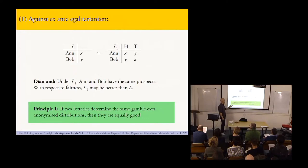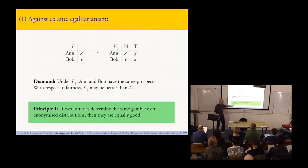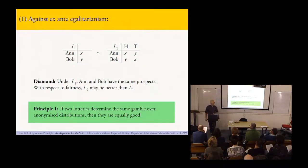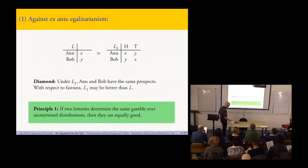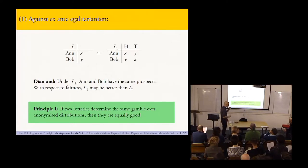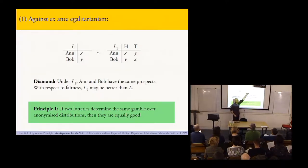Our first principle rejects this line of egalitarian thinking. It says that if two lotteries determine the same gamble over anonymized distributions — one person gets a cookie and one person doesn't — then they are equally good. Audience: Why do you call this an egalitarian consideration rather than a fairness consideration? Speaker: Fair enough. The point is that over here they have the same prospect — that's a kind of equality — but our first principle says that doesn't give L1 any additional value.